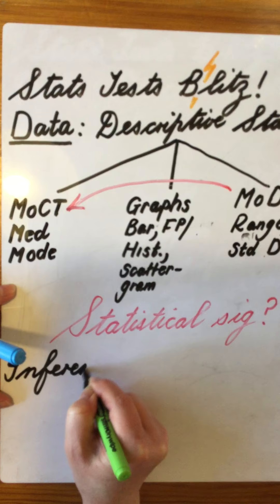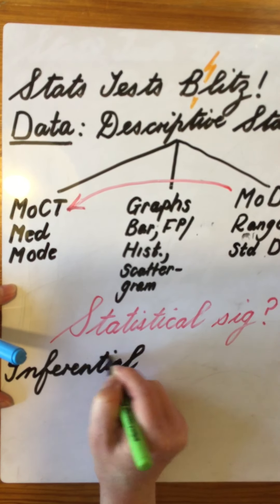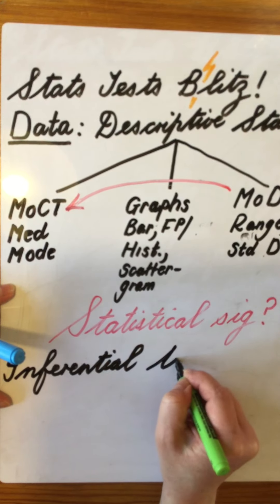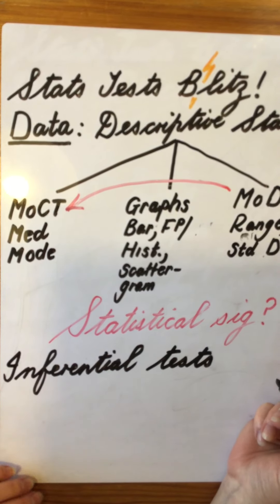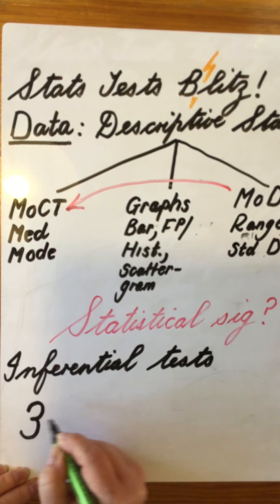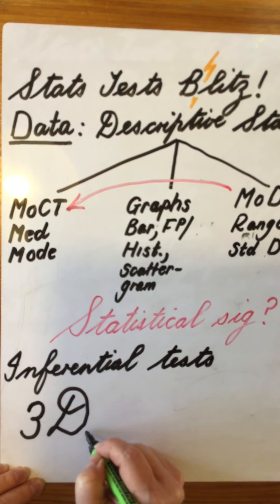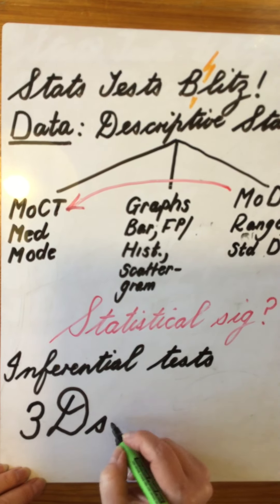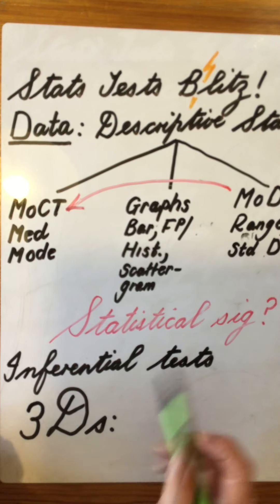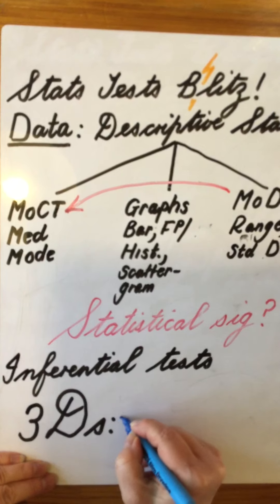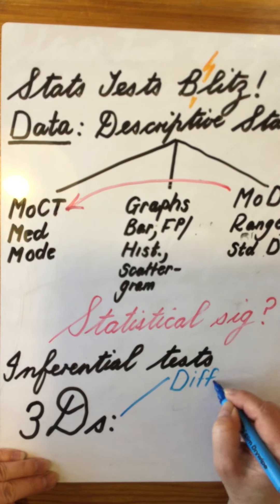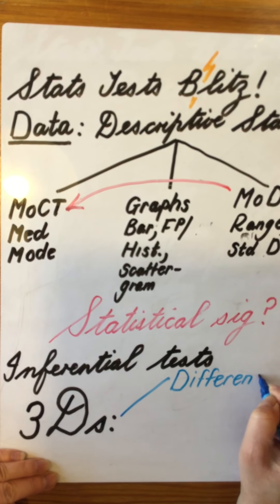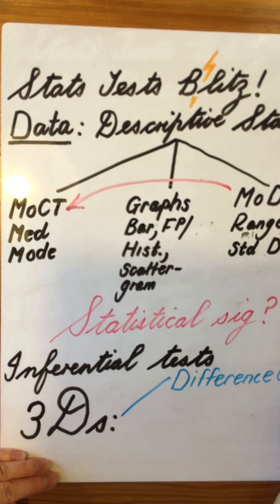Inferential tests refer to all those statistical tests that we have done. With inferential statistics, we know there are three really important things before we can choose any kind of test — the three Ds. First D: is it a test of difference? It might not be, because what we might be looking at is a correlation — so there it's a test of a relationship.